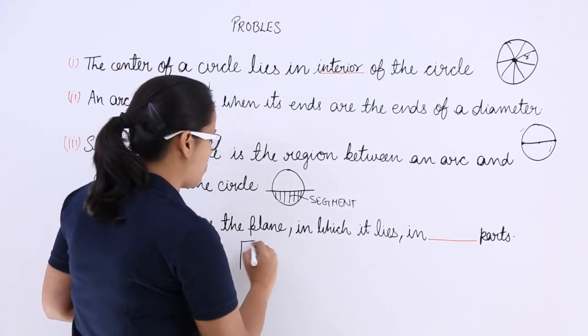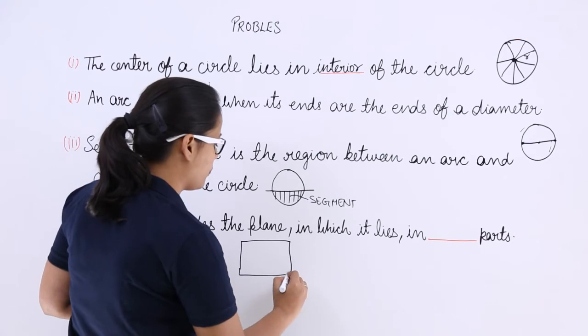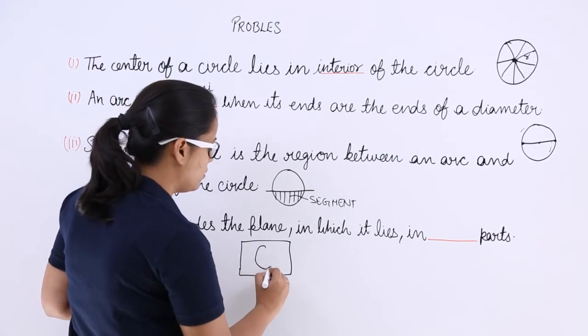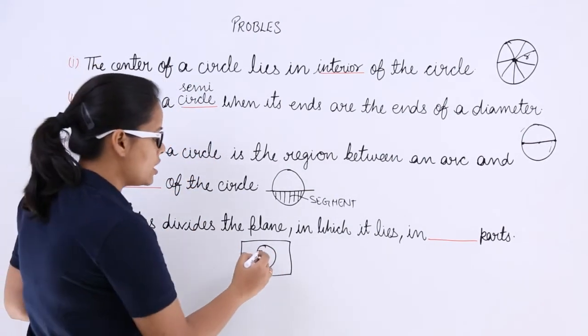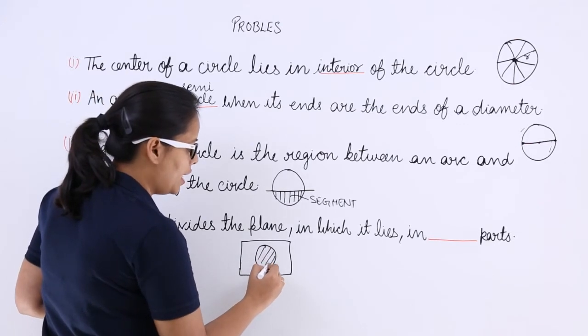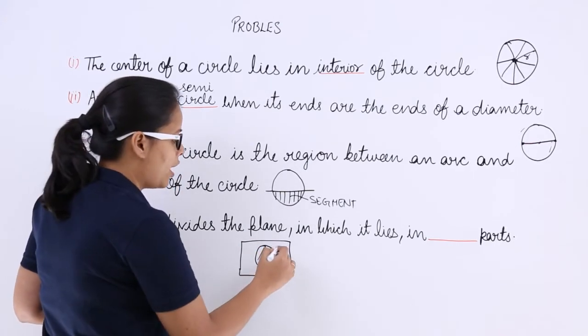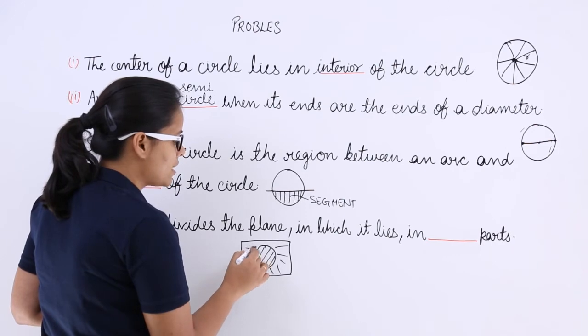You can see here, this is a plane. Let's suppose this is a plane here. And this is a circle. So this is the interior of the circle. And whatever is outside of the circle is known as the exterior of the circle.